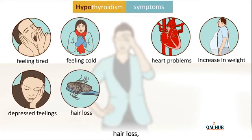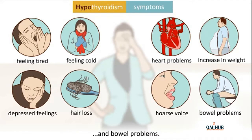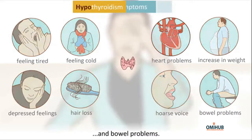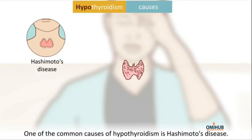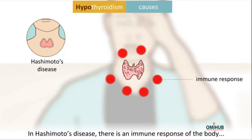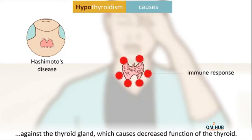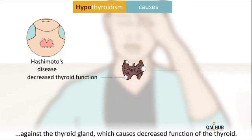Additional symptoms of hypothyroidism include hair loss, a hoarse and deeper voice, and bowel problems. One of the common causes of hypothyroidism is Hashimoto's disease, in which there is an immune response of the body against the thyroid gland, causing decreased function of the thyroid.